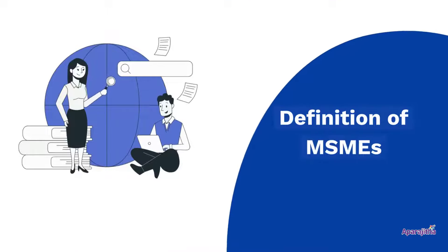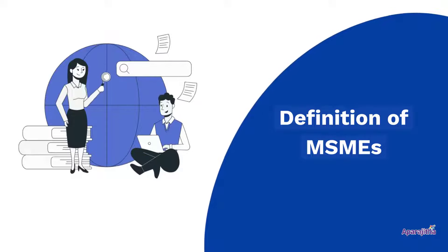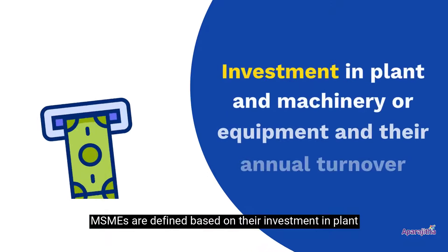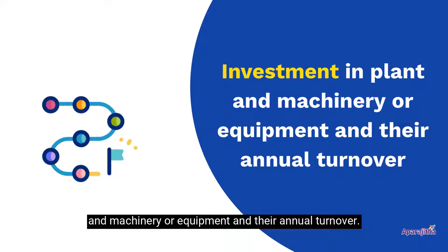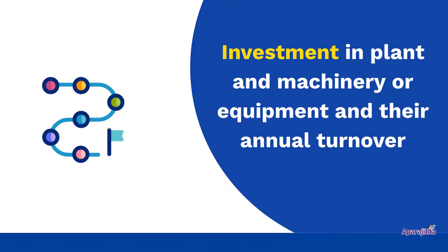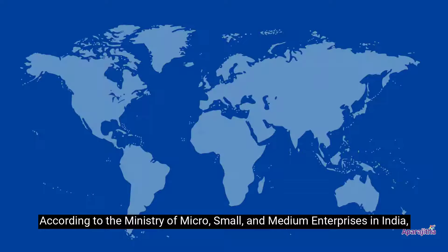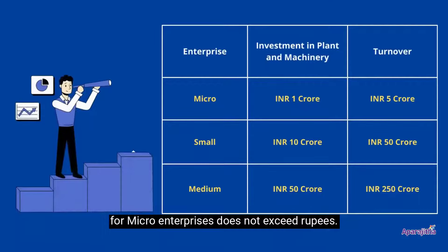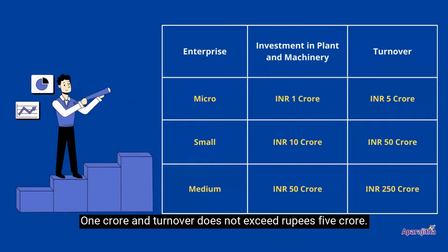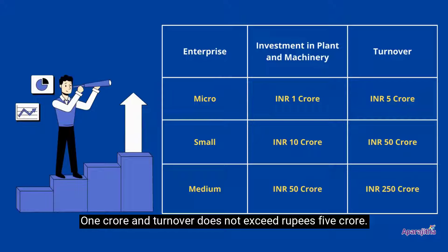MSMEs are defined based on their investment in plant and machinery or equipment and their annual turnover. According to the Ministry of Micro, Small and Medium Enterprises in India, for micro-enterprises, investment in plant and machinery or equipment does not exceed rupees one crore, and turnover does not exceed rupees five crore. For small enterprises, investment does not exceed rupees 10 crore.